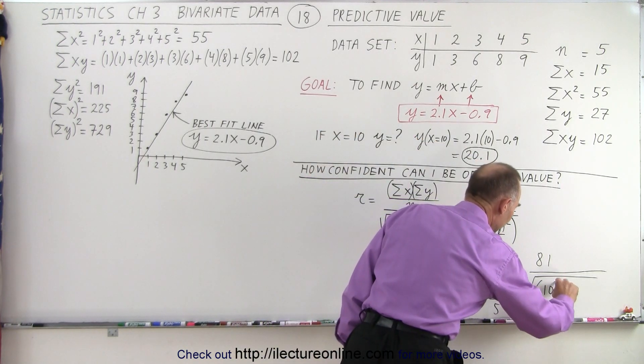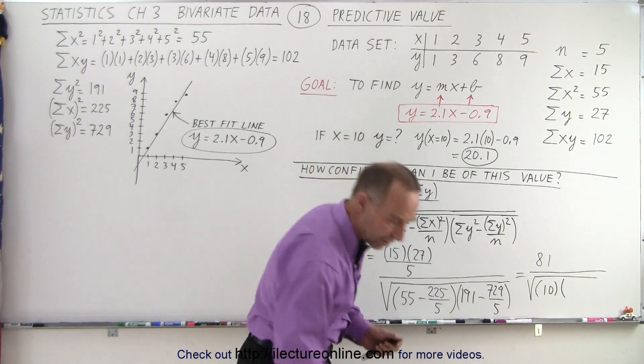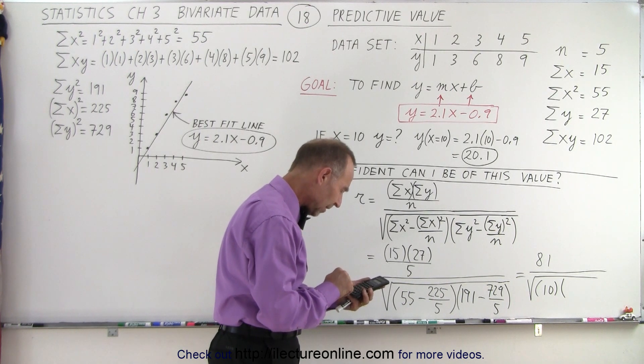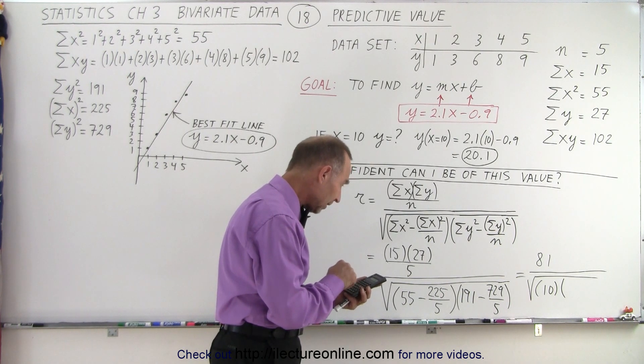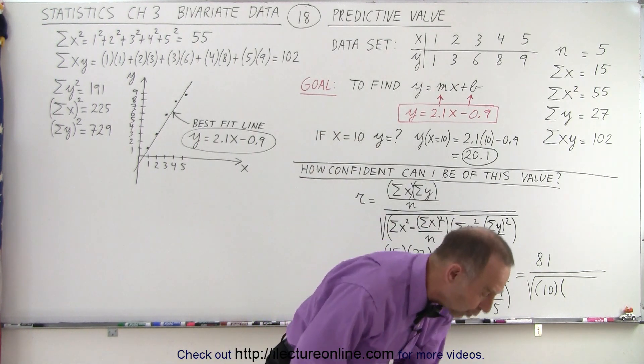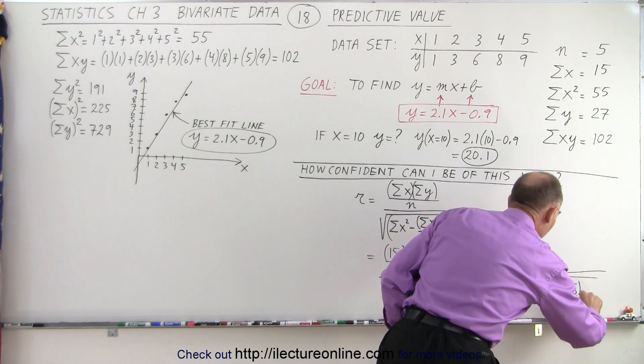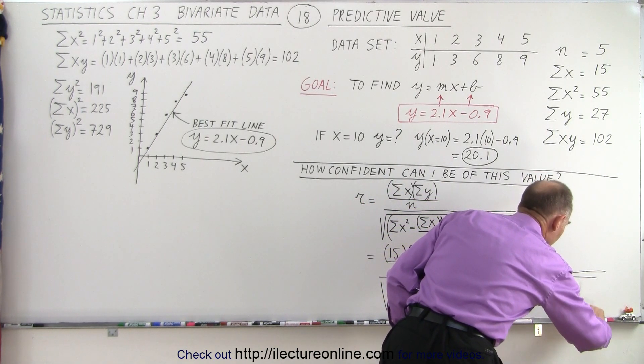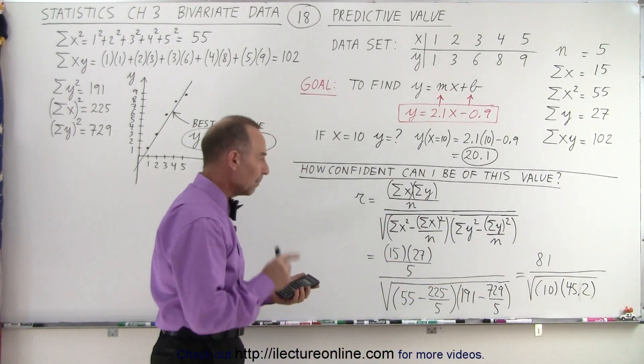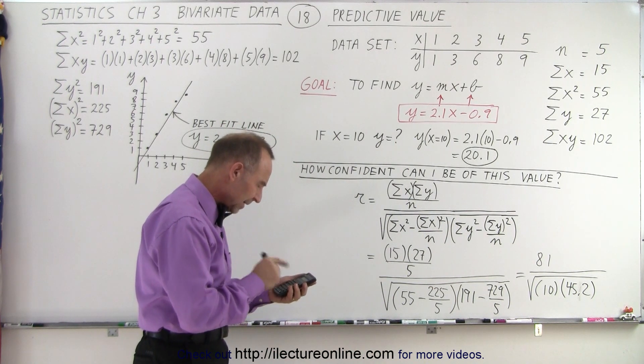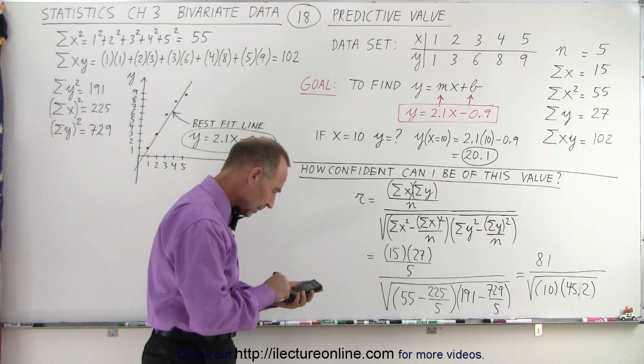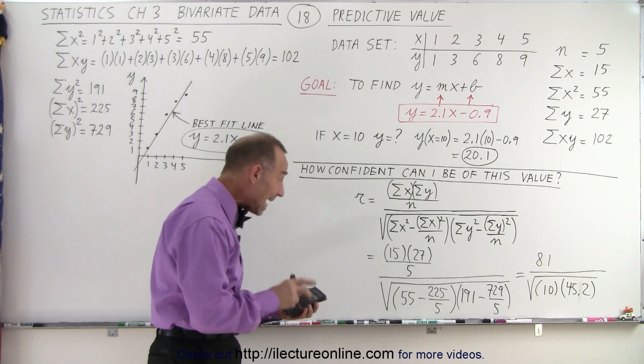So here we get 10 times, now let's see here, I need a calculator for that. Okay, we have 729 divided by 5, and subtract that from 191, we get 45.2. That's 45.2, and gotta get the 0.2 in there, like that. Okay, multiply that times 10, take the square root of that, and divide that into 81. And I get 0.988.